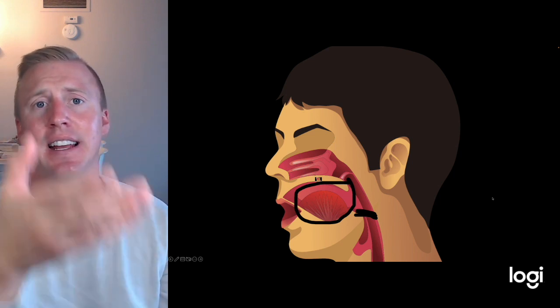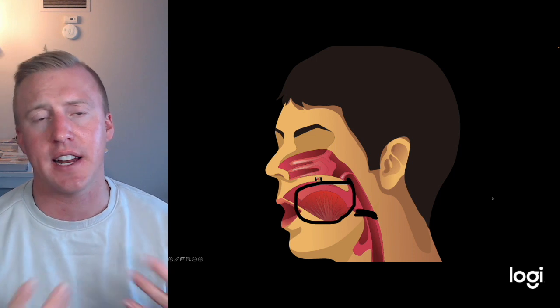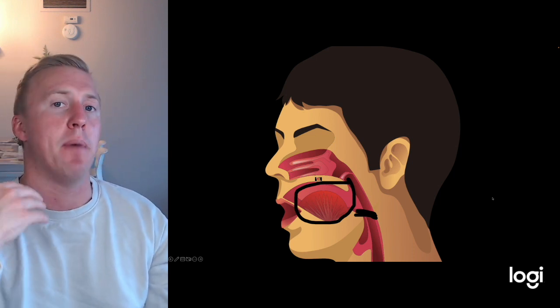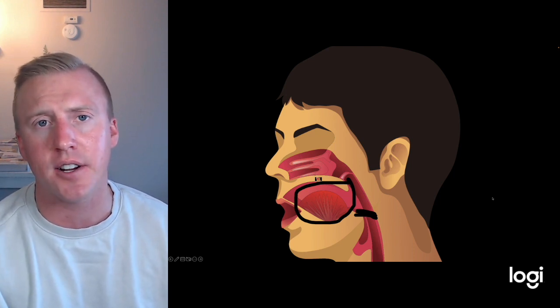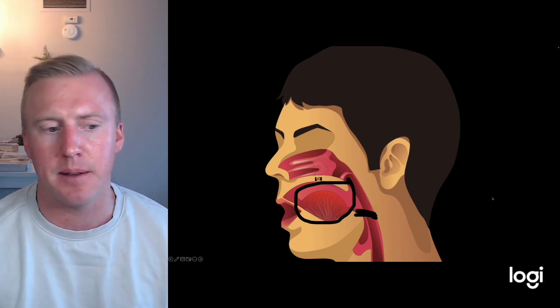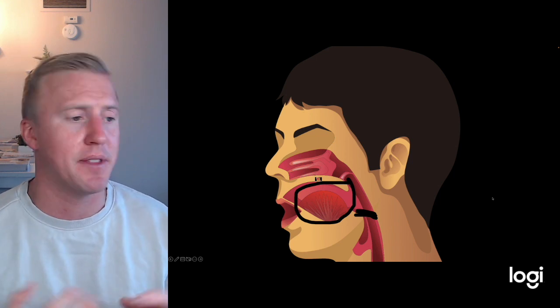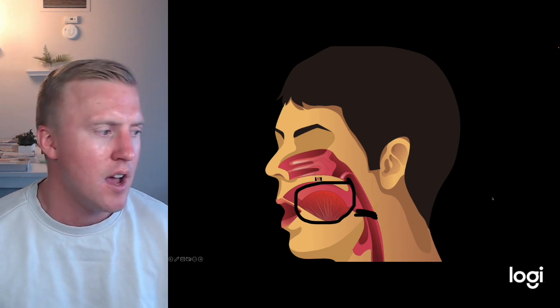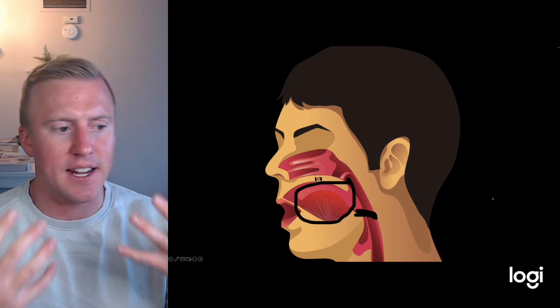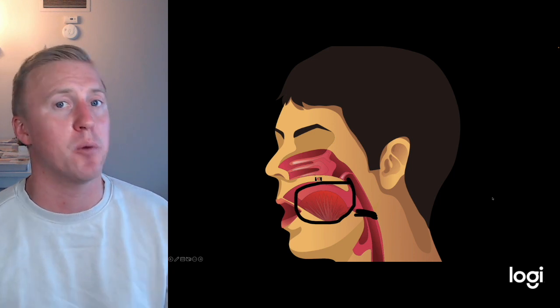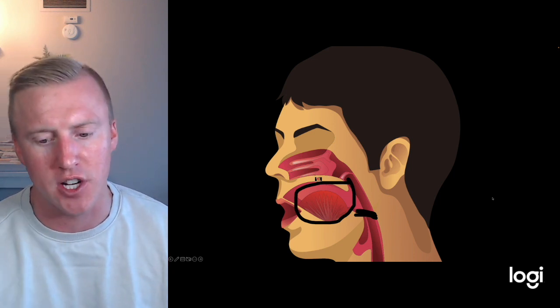If someone's drinking alcohol or has sedatives on board, that can cause all this area to relax and fall back. That's why we have to be careful as providers—patients that come in with insomnia sometimes get prescribed things like benzos or benzo-like drugs like Ambien or Lunesta, which cause relaxation of these muscles and might actually make obstructive sleep apnea worse.